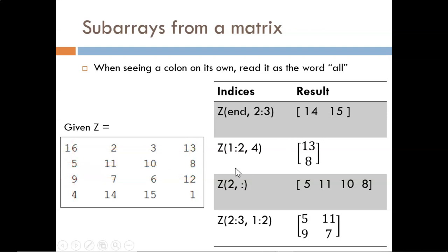In the next example, we extract only rows 1 through 2, so ignore the other rows, as well as column 4, so ignore all the other columns. This leaves us with this small column vector.